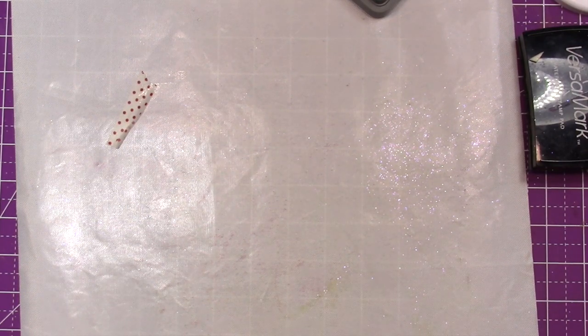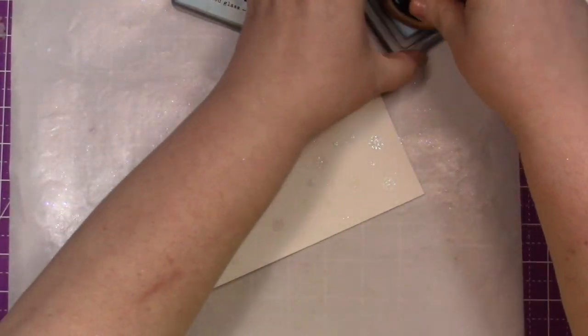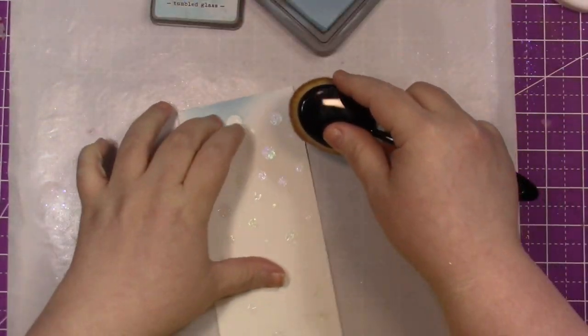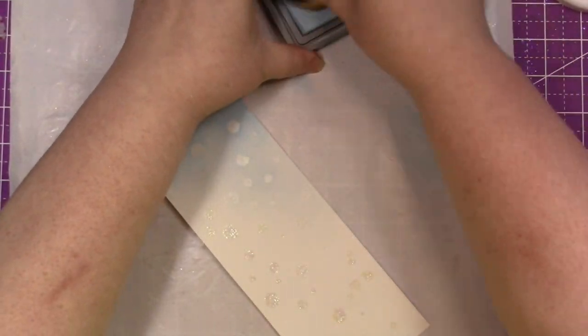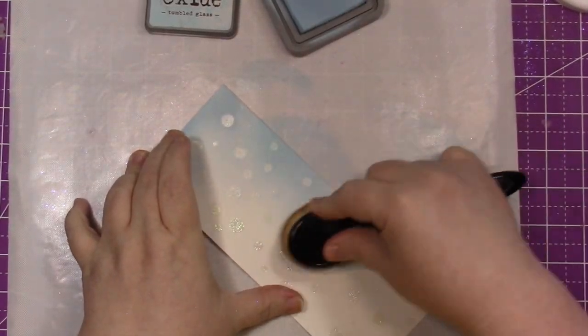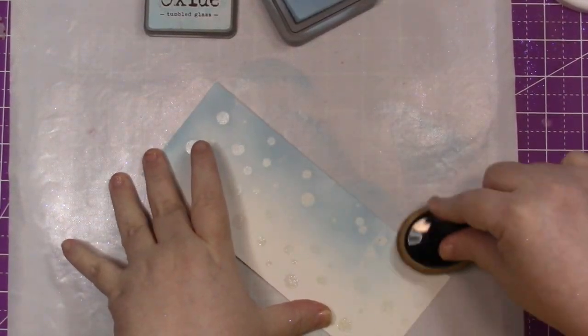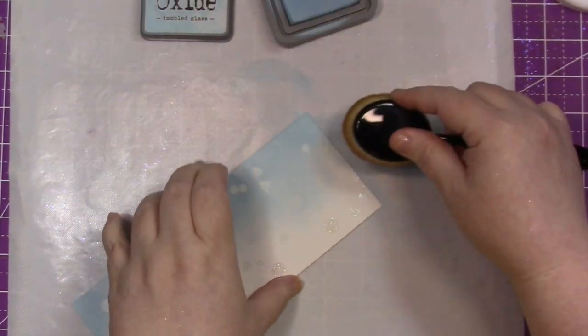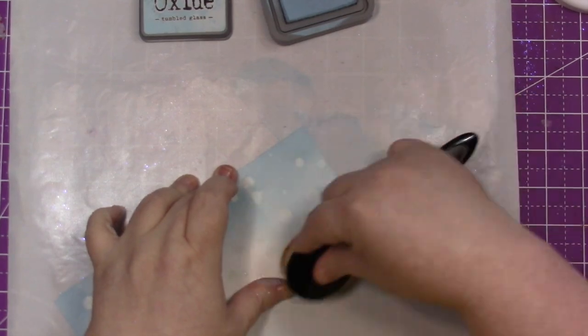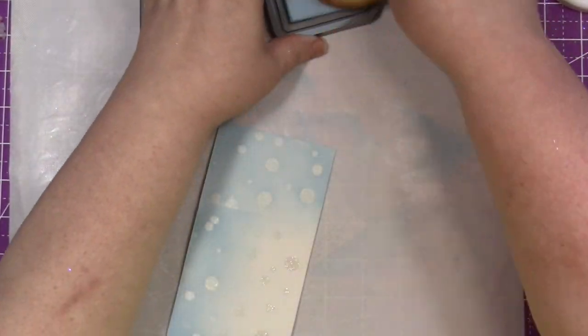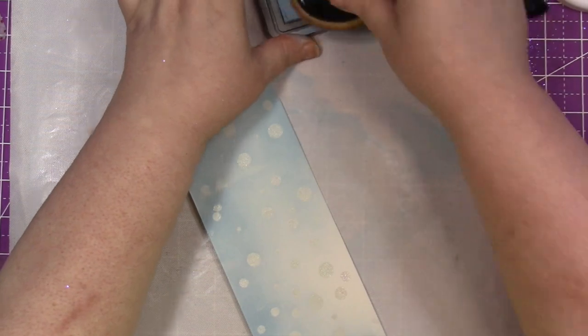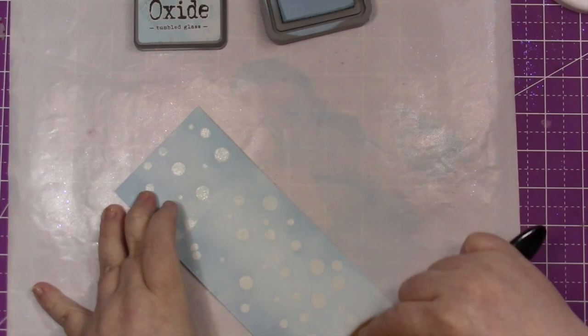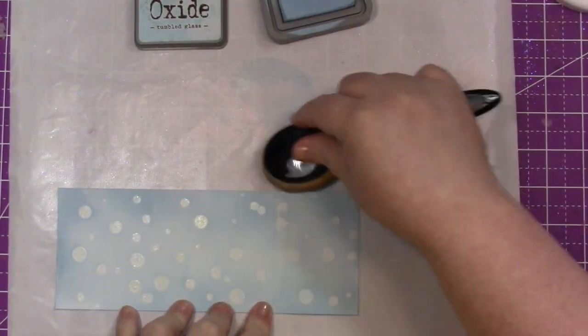For the ink blending, I'm going to go ahead and bring in my Tumbled Glass Distress Oxide ink. I'm not doing any kind of special blending. I'm just adding some color to the paper. You could totally do this on colored cardstock and then skip this step, but I really wanted the look of a blended sky to give it a little bit more dimension. You can see there on the top left I kind of made a boo-boo, and that's okay. I'm going to cover it, so don't be afraid to make mistakes.